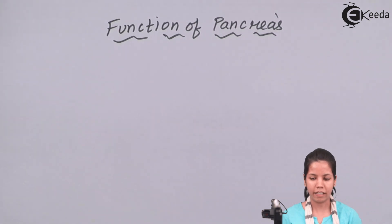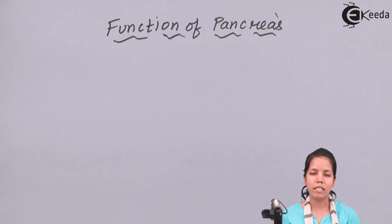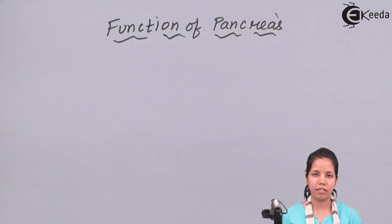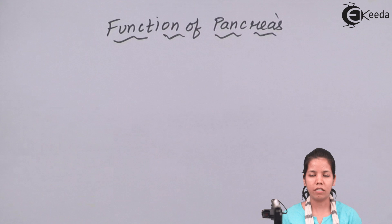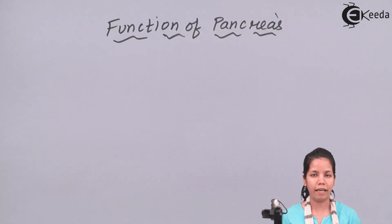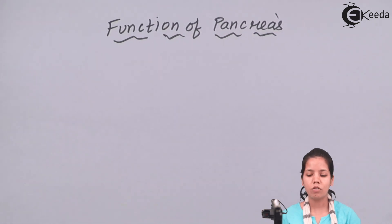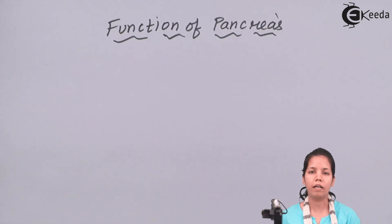One of the first enzymes that is secreted is amylase. This amylase is one of the enzymes that acts on starch. Suppose you have eaten rice — rice is rich in starch. So whenever you digest rice molecules, starch is released, and this amylase enzyme acts on starch molecules and converts it into maltose.